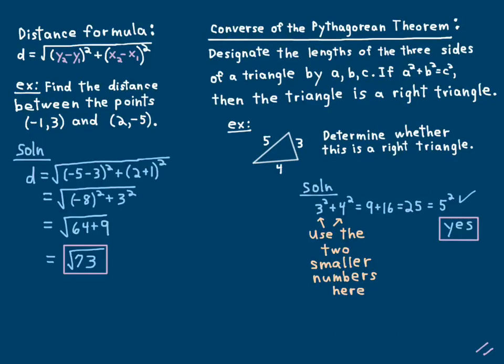So the second video on circles here. I'm just going to rewrite the distance formula from the bottom of the last video, just to remind you what it is. d equals square root of the quantity y2 minus y1 squared plus the quantity x2 minus x1 squared.